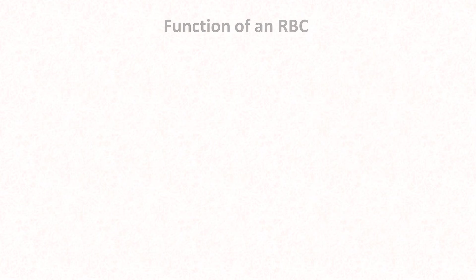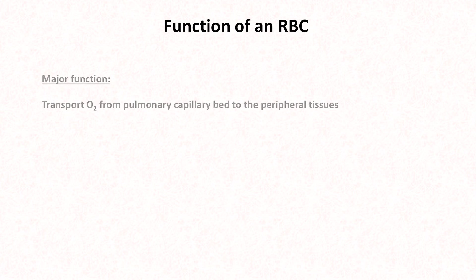As you likely already know, the major function of the red blood cell is the transport of oxygen to the cells in the rest of the body, which it does with the help of the protein hemoglobin, by far the most abundant protein within red blood cells. A discussion of the incredible biochemistry of the hemoglobin molecule itself is outside the scope of this particular video, but it is covered in my video on dyshemoglobinemias from about the 7-minute mark — a link to that will be in this video's description.